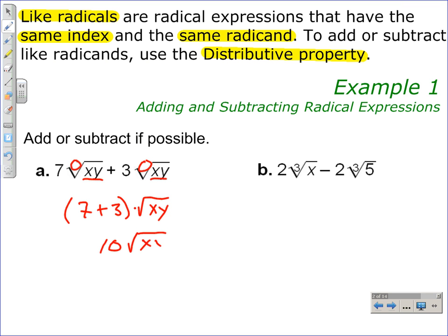In simplest form, the original expression is 10 square roots of XY, or 10 times the square root of XY. In part B of example 1, we notice that these two radicals are the cube root, but the radicand is different. Therefore, we cannot add these because the radicand is different.